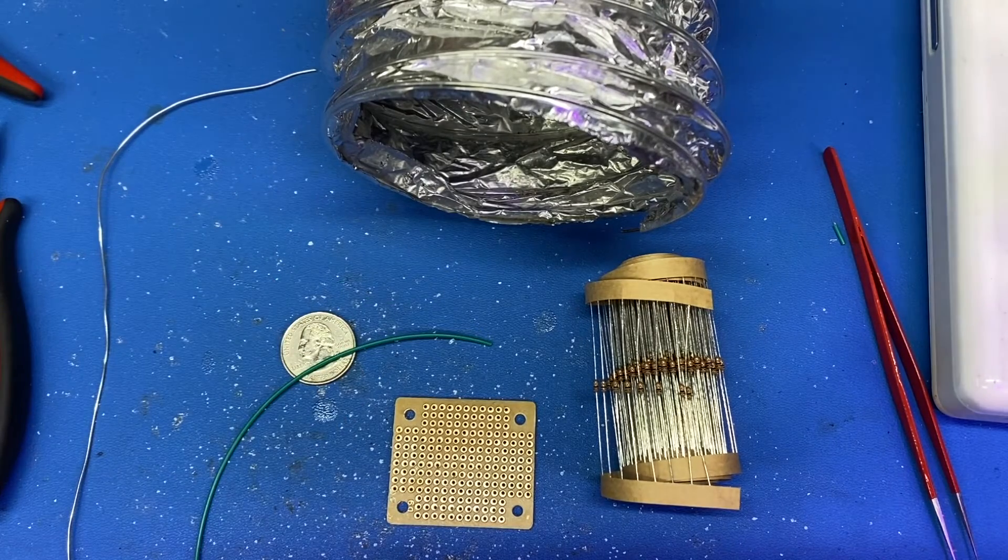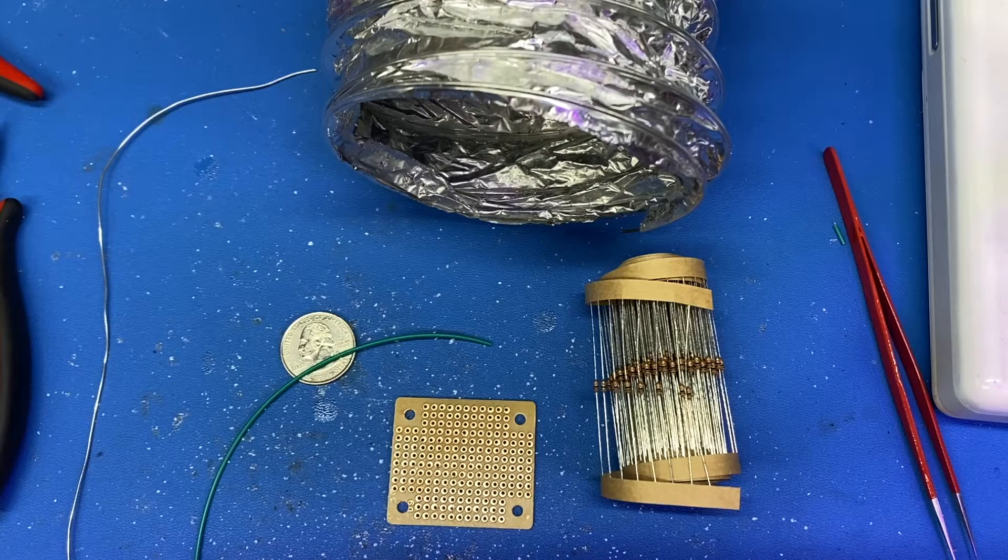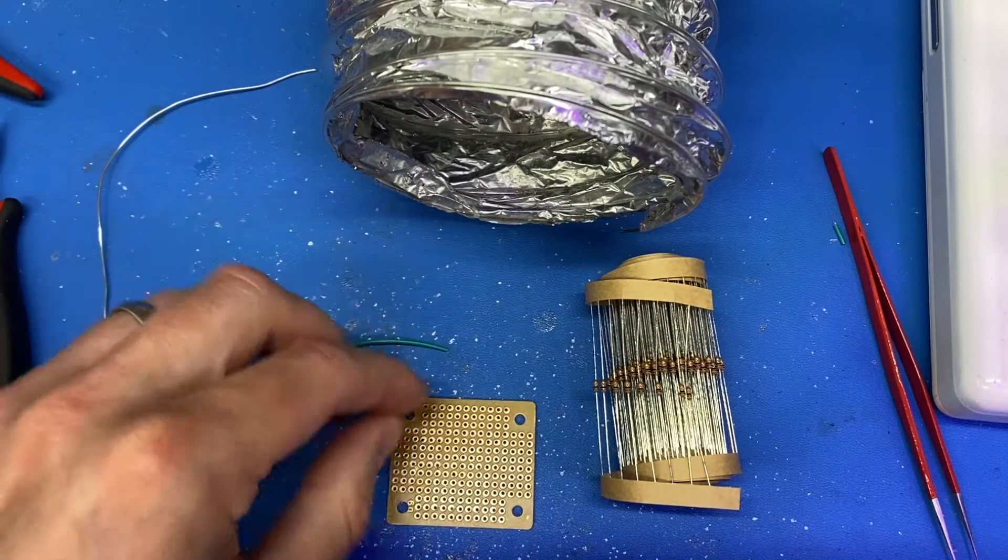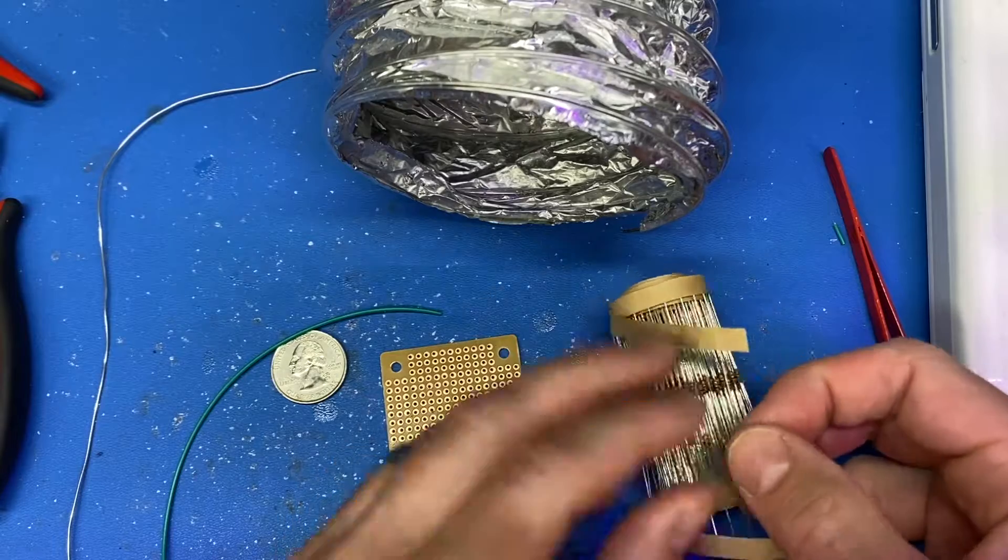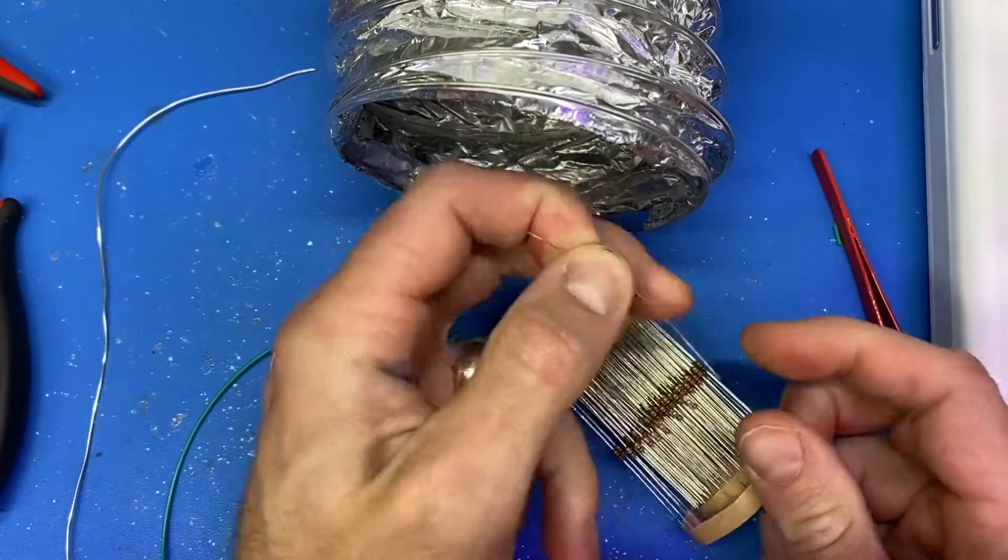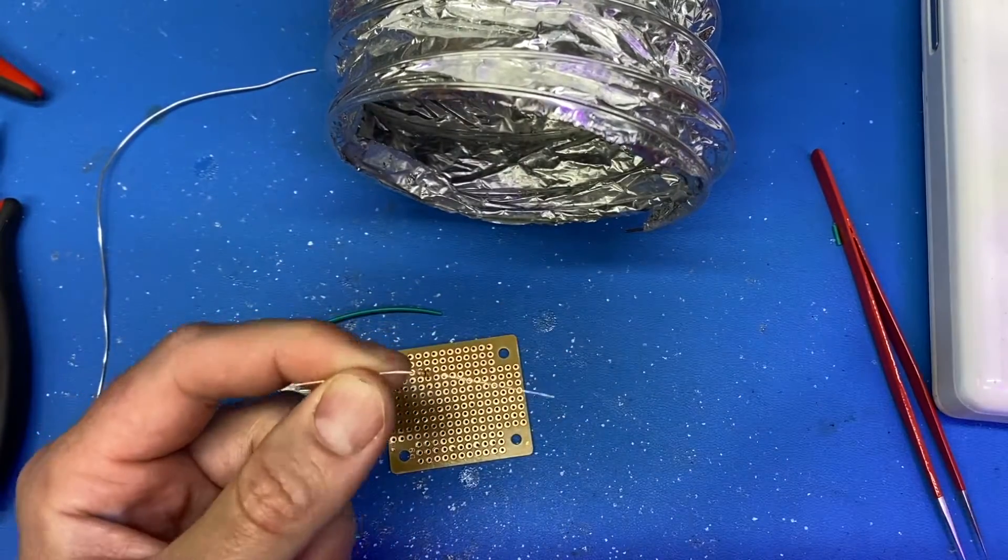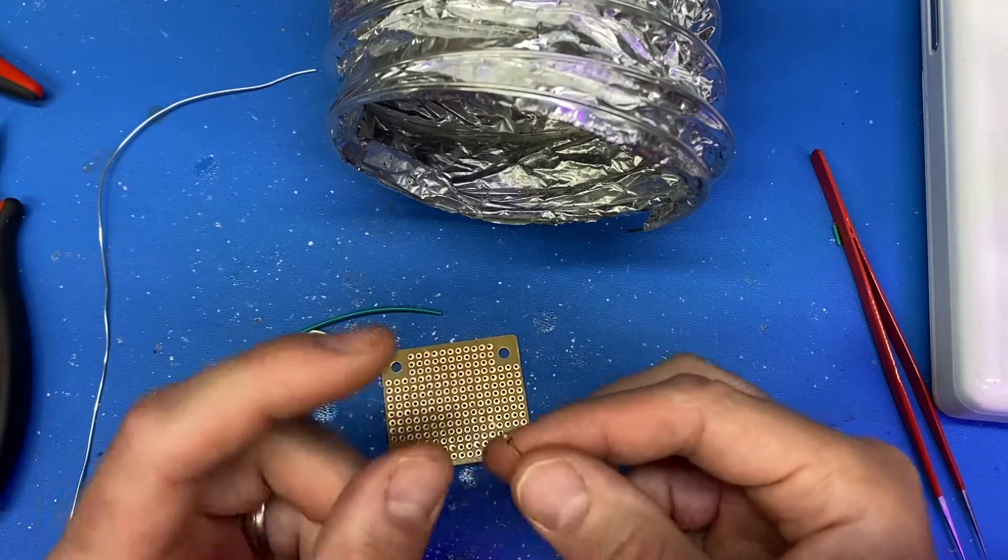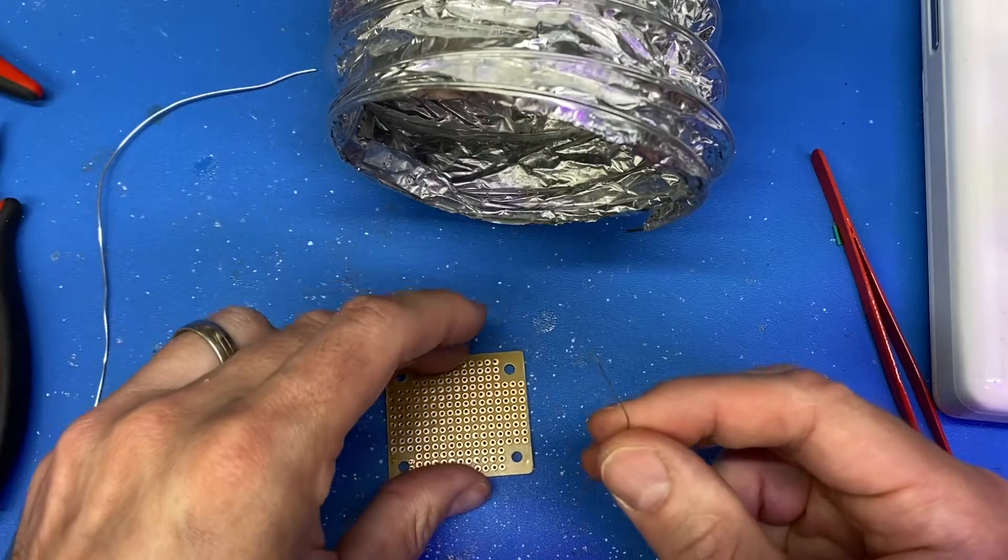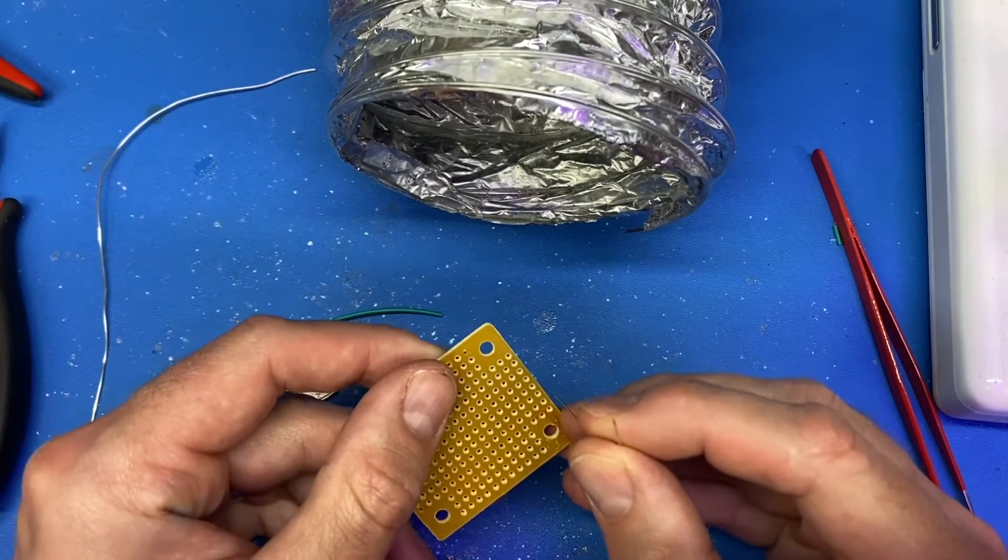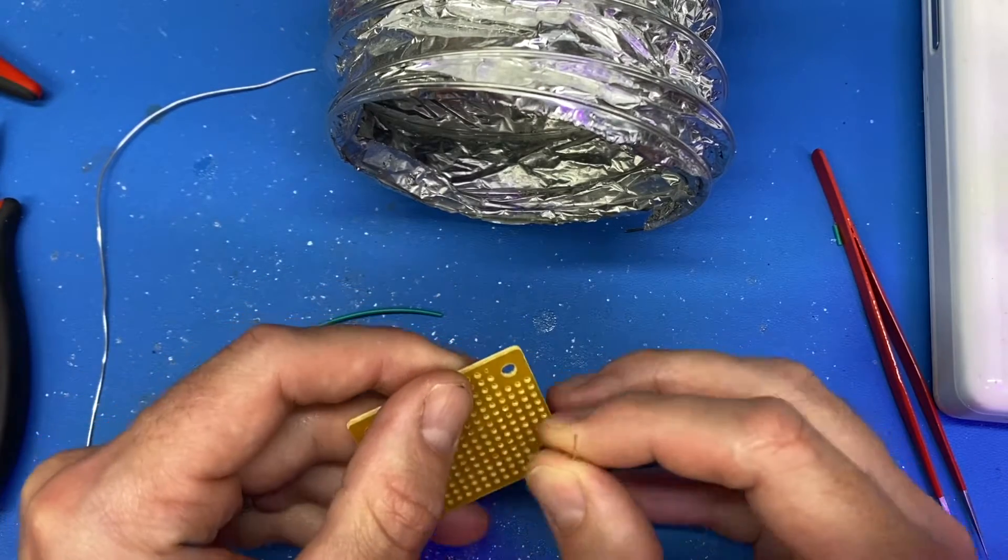Sometimes you want to move beyond just a breadboard to actually connect pieces together. So you can get these little protoboards that let you solder pieces on, and it's often easier to solder things like these older style resistors or capacitors on these instead of the surface mount ones.